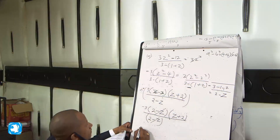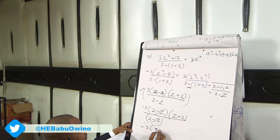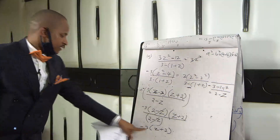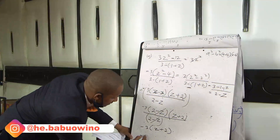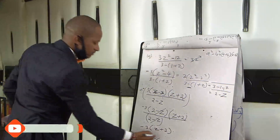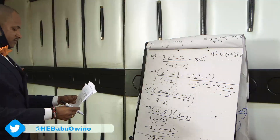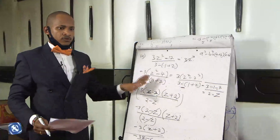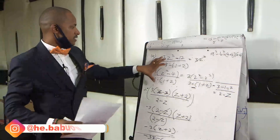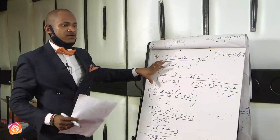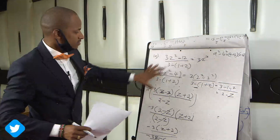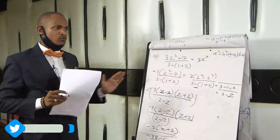What you remain with is negative 3 into z plus 2. When you expand this, you will have minus 3z minus 6. But you can just leave it in the factored form. That is the answer for this. These mathematics require you to be very careful with the signs — if you miss a positive for a negative, you will automatically get it wrong. But it is still manageable; it just requires a lot of keenness.